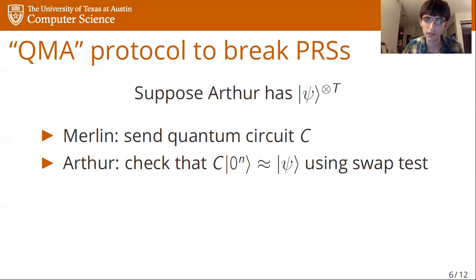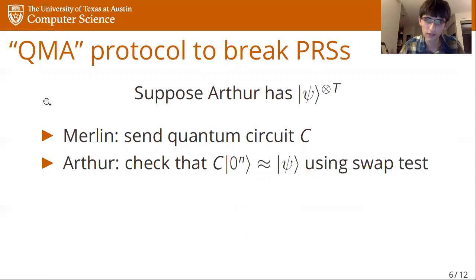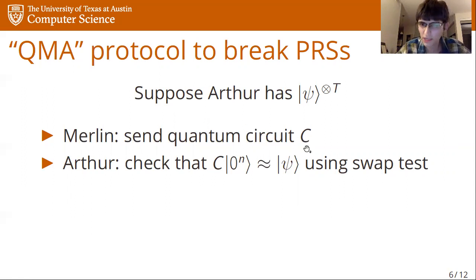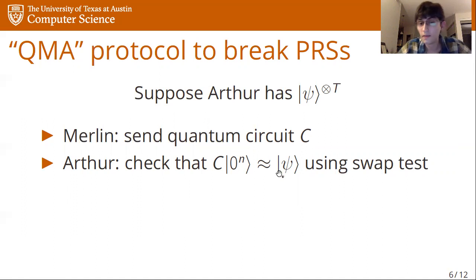QMA stands for quantum Merlin-Arthur, the complexity class of problems that can be verified efficiently by a quantum device — sometimes described as the quantum analog of NP. Arthur is a computationally bounded verifier and Merlin is an all-powerful but perhaps untrustworthy wizard trying to convince Arthur. The QMA protocol to break pseudorandom states works as follows: Merlin sends Arthur a description of some quantum circuit C, claiming it can produce the state. Arthur runs the circuit on the all-zeros input and checks it produces a copy of Psi via the swap test, reducing soundness arbitrarily low using multiple copies.